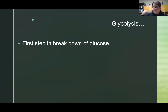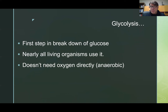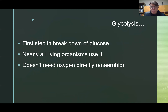Glycolysis is the first phase of breaking down sugar into energy that cells can use. Nearly all living organisms operate by glycolysis, both eukaryotes and prokaryotes. There might be a few exceptions on the margins of the living spectrum — strange organisms that can live around volcanoes — but nearly all organisms use glycolysis to break down sugars. It's an anaerobic process, which means that it doesn't require oxygen for it to happen.